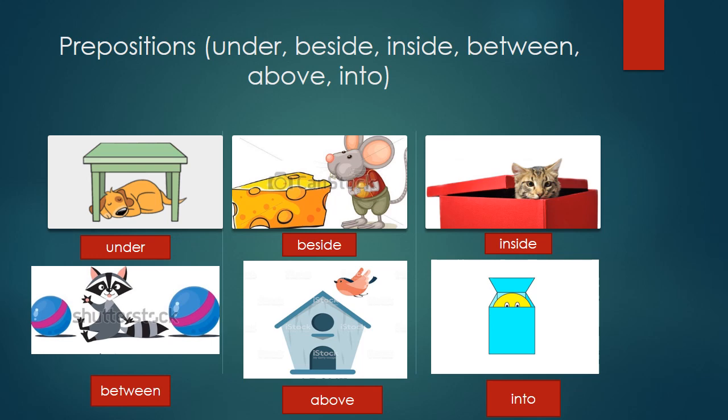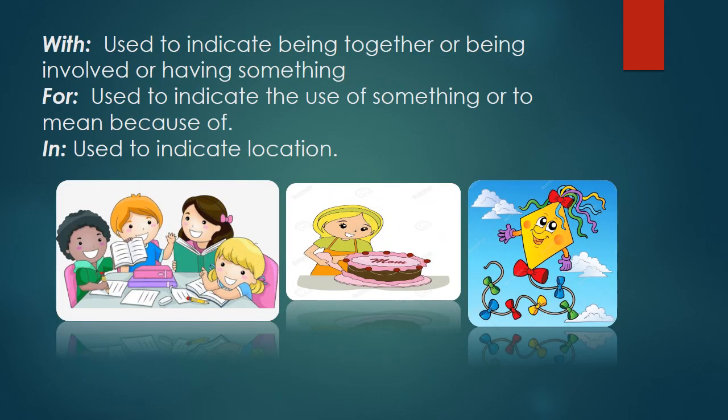Next, we read a few selected prepositions: under, beside, inside, between, above, into. For example, if I ask 'where is the bird?' — the bird is above the house. Similarly, 'where is the dog?' — the dog is under the table.